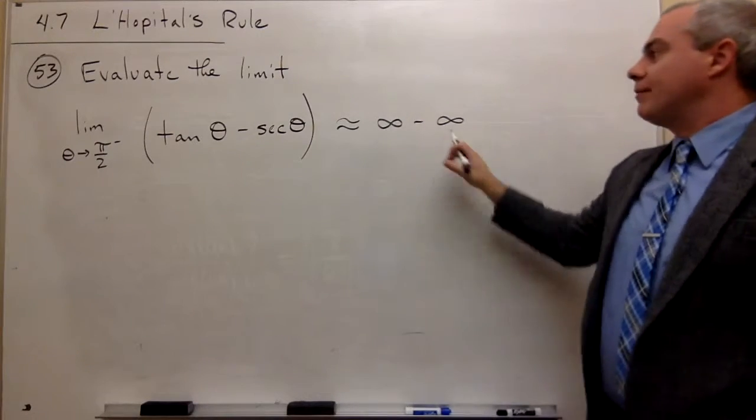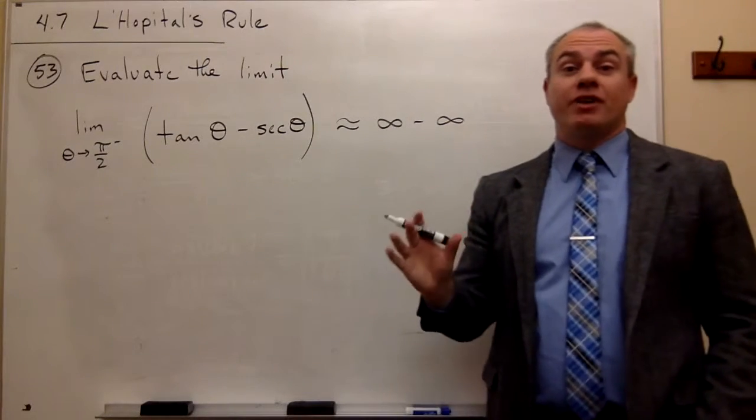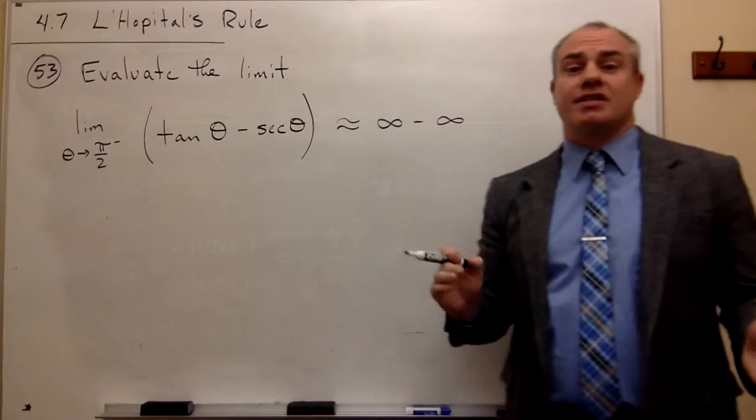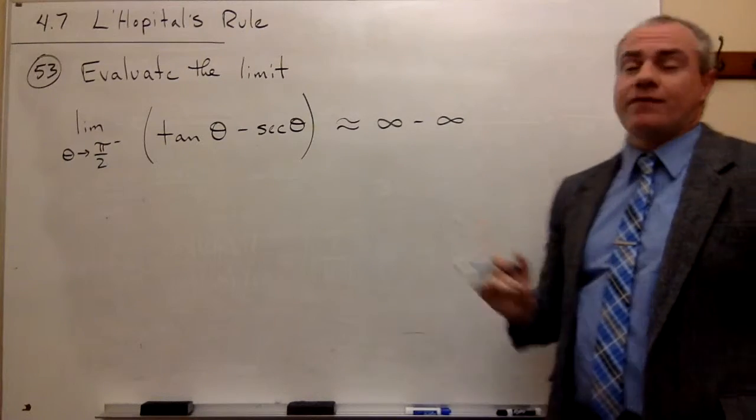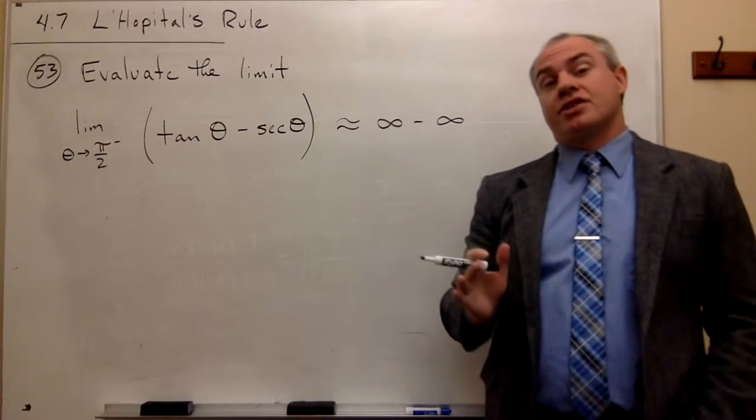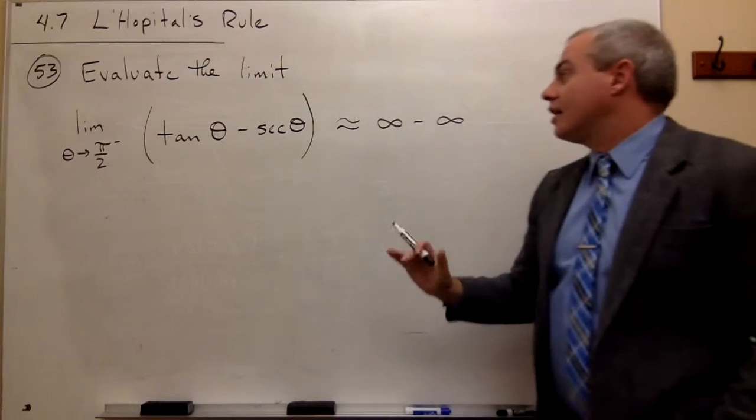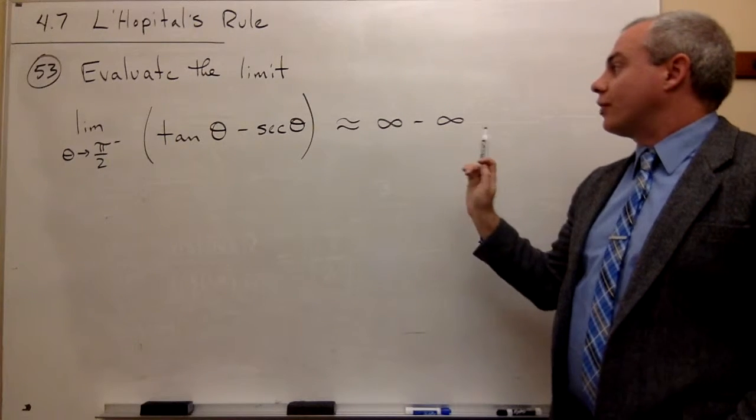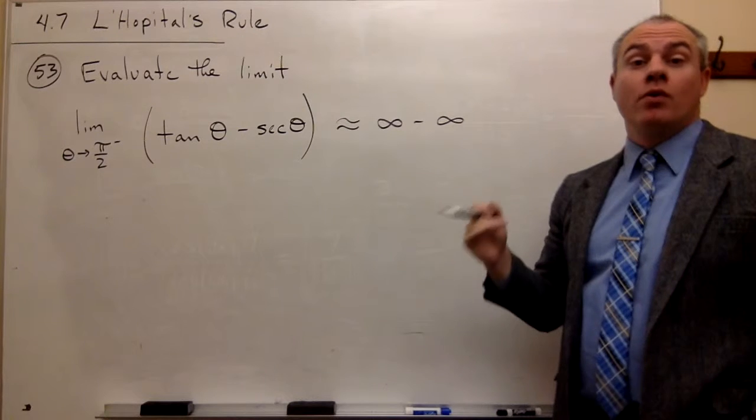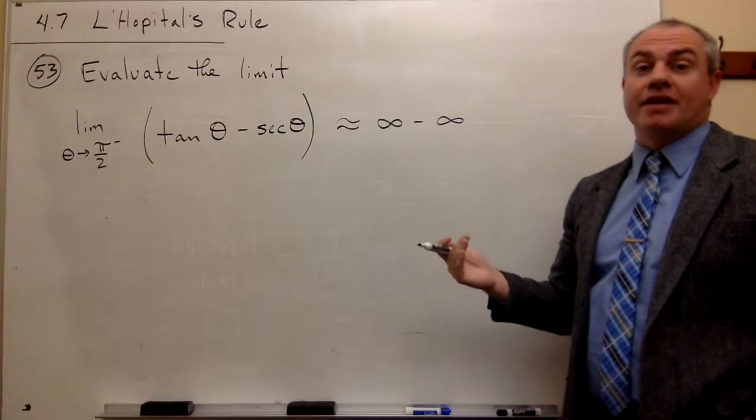So I get the form infinity minus infinity, which I have to be really careful that I don't say something silly like that infinity minus infinity is 0. That's just not true in most cases. So we just have to be careful. It's an indeterminate form. We don't know what we're going to get out of this thing yet.